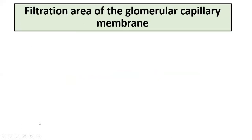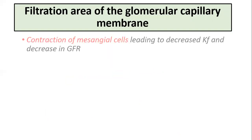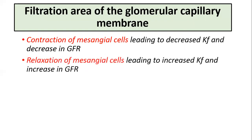The second factor is the filtration area of the glomerular capillary membrane. The glomerulus contains mesangial cells, which contain myofilaments and may contract. Contraction of mesangial cells decreases the filtration area, which decreases the ultrafiltration coefficient and in turn causes a decrease in GFR. The opposite occurs with relaxation of mesangial cells, which increases the filtration area and the filtration coefficient.